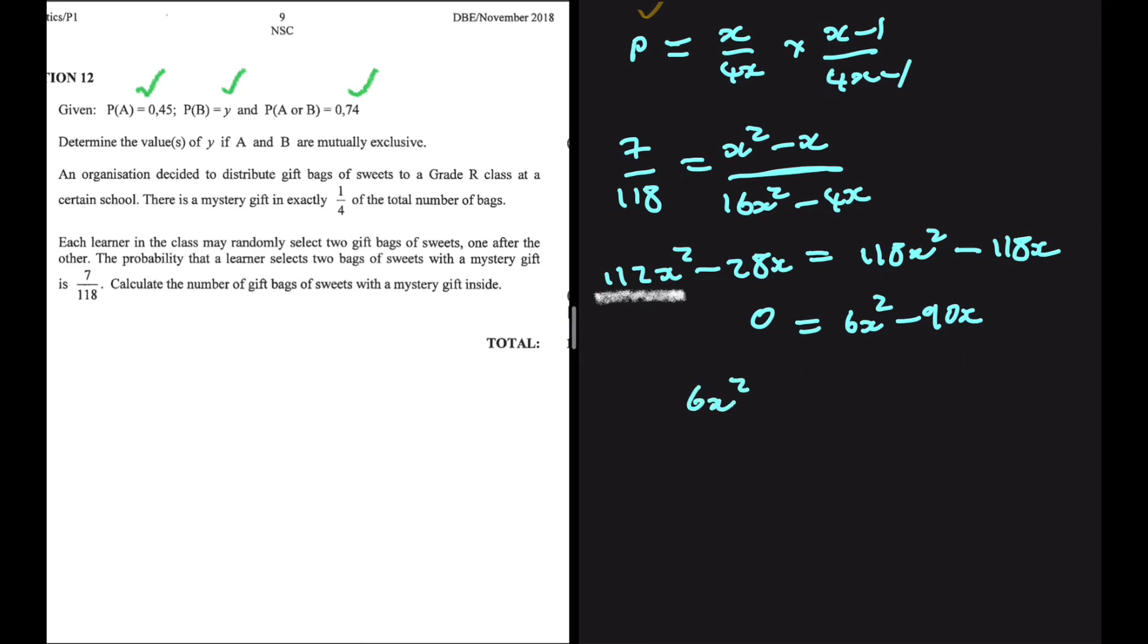So we're going to take X as a common factor. If we do that, we're going to have X and then multiply it by 6X minus 90 being equals to 0. X cannot be equals to 0, obviously. So X will be equals to 90 divided by 6, which is equals to 50. This is the number of gift bags of sweets with a mystery gift inside.